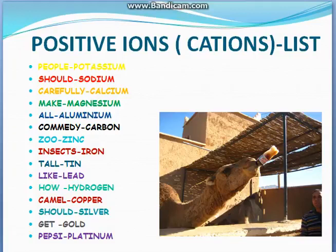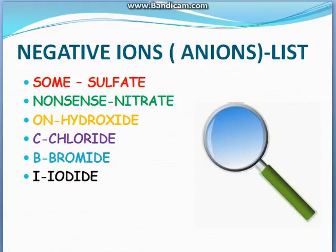Now moving to the negative ion list, here's the mnemonic for anions: 'Some nonsense on CBI.' S for Some = Sulfate, N for Nonsense = Nitrate, O for On = Hydroxide.